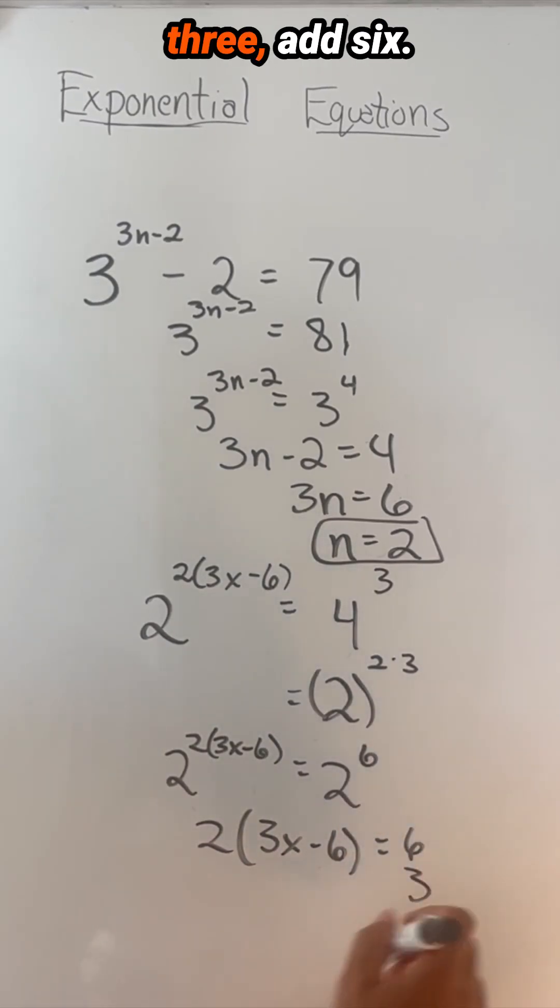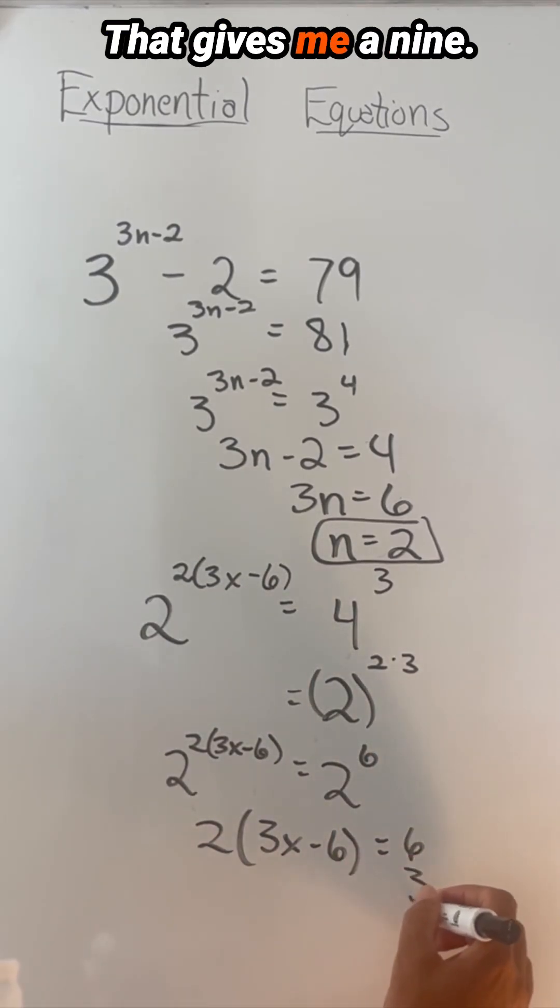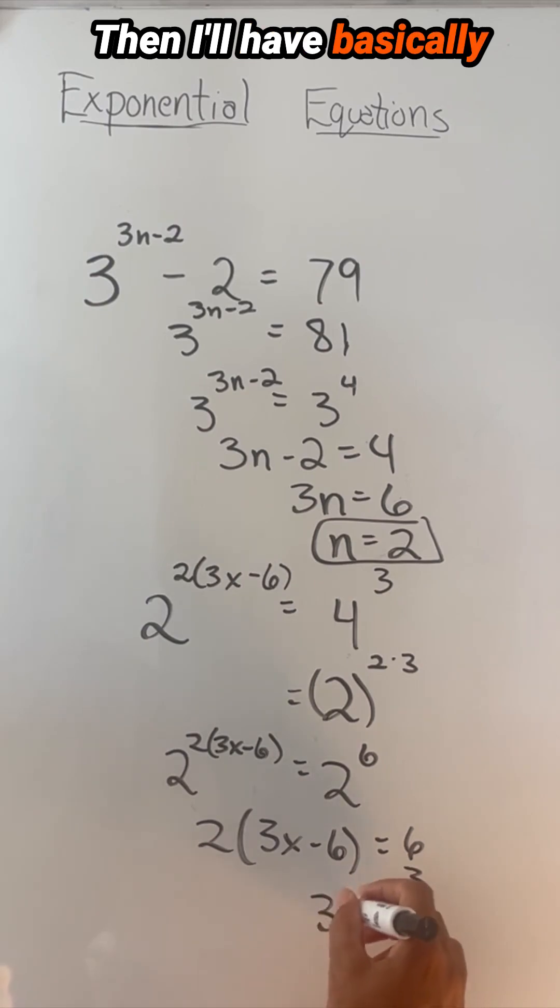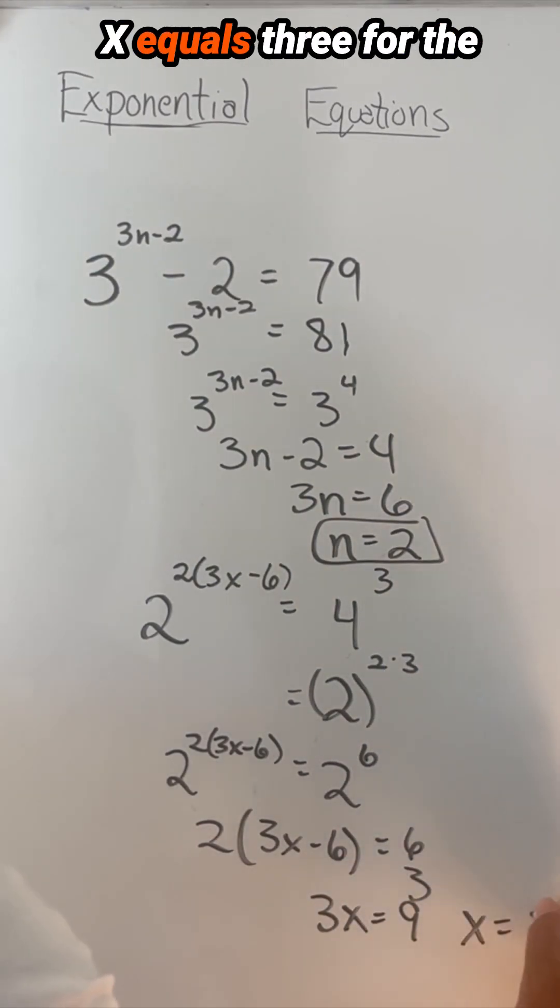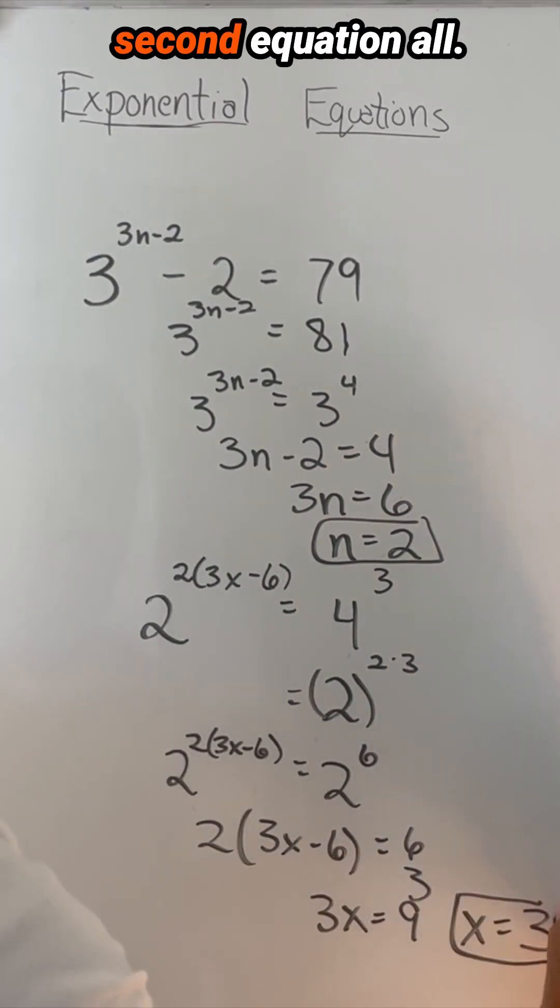Divide by two, that gives me a three. Add six, that gives me a nine. Then I'll have basically the three x equals nine. Divide that and I'll have x equals three for the second equation.